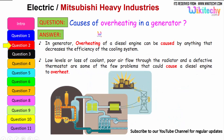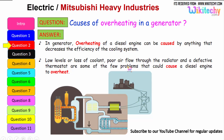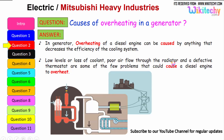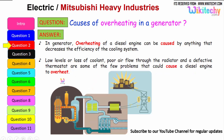Let us move on to the next question: causes of overheating in a generator. Overheating of a diesel engine can be caused by anything that decreases the efficiency of the cooling system. It can be due to loss of coolant or low levels of coolant, poor air flow through the radiators, and a defective thermostat — these are some of the problems that could cause a diesel engine or a generator to overheat.